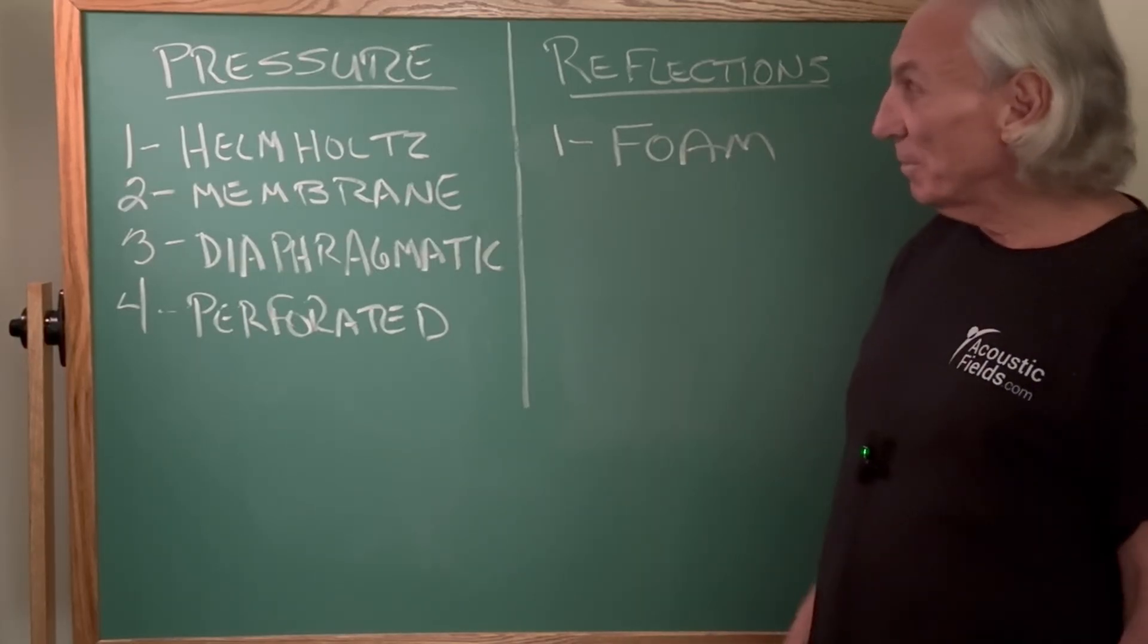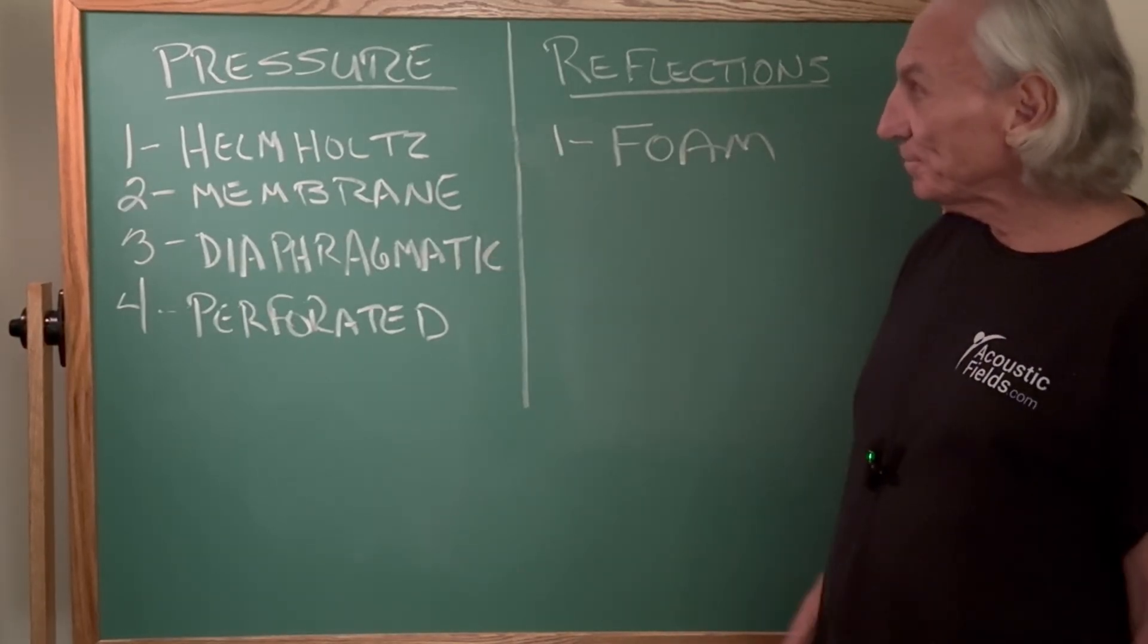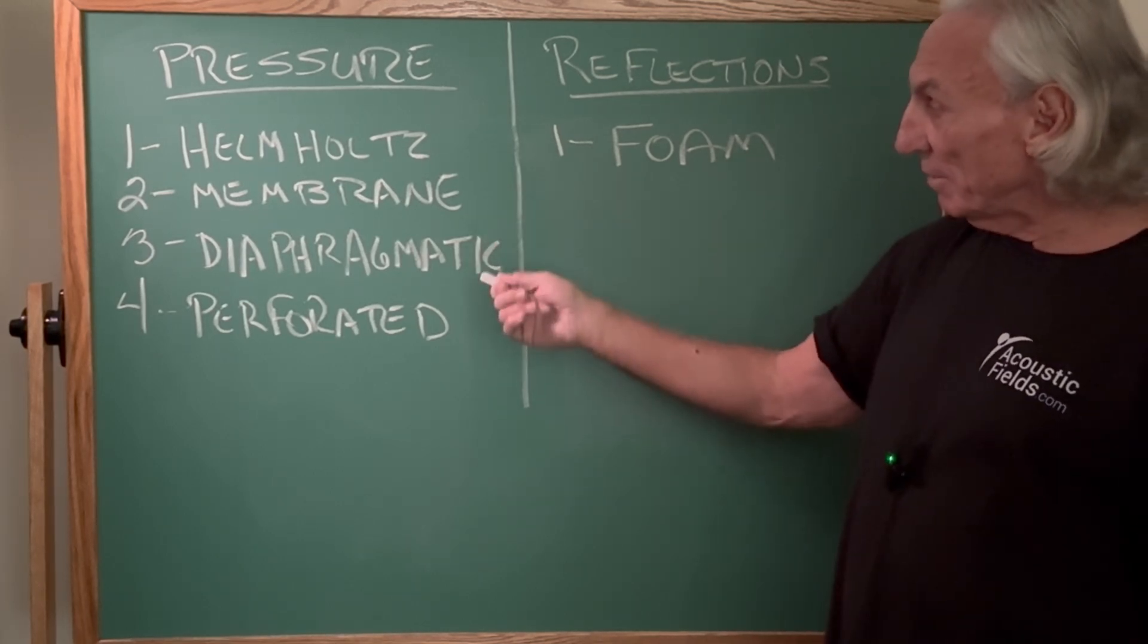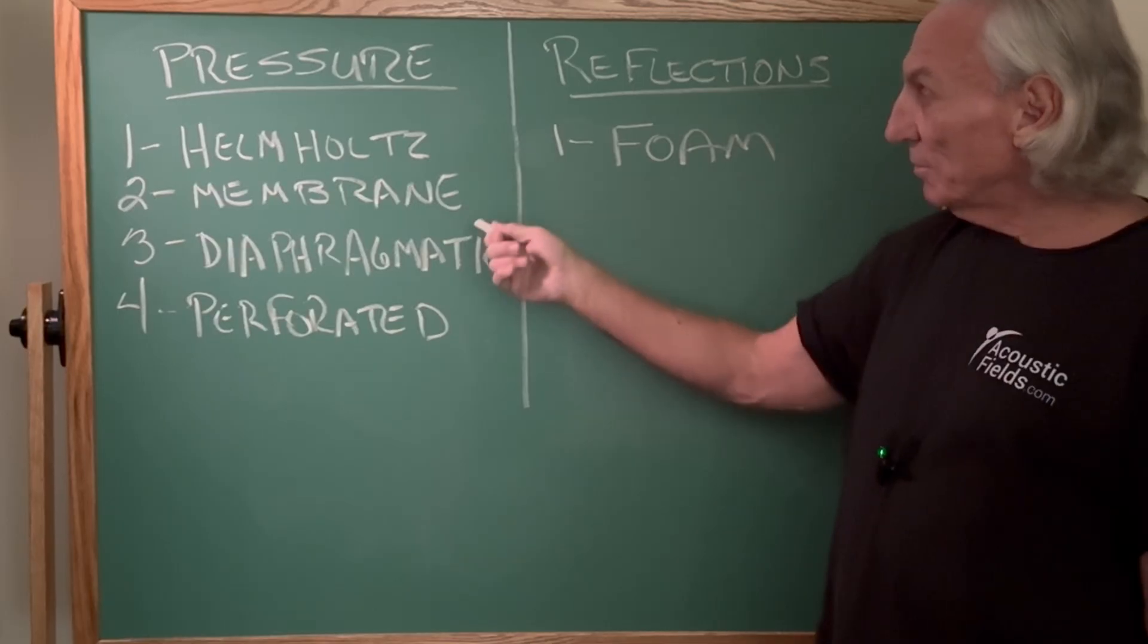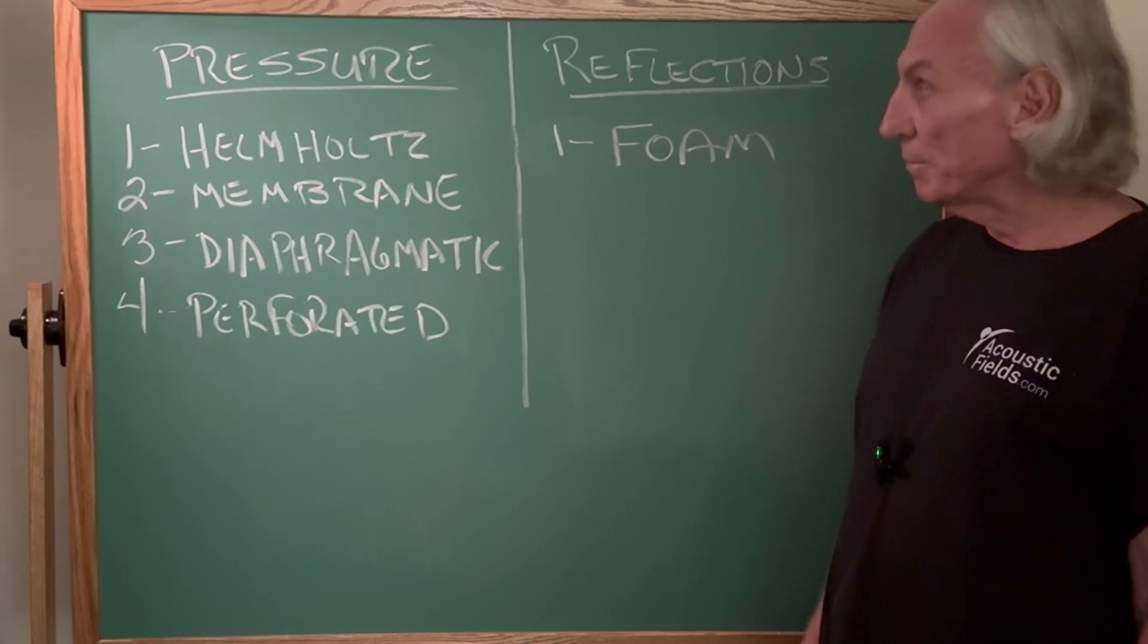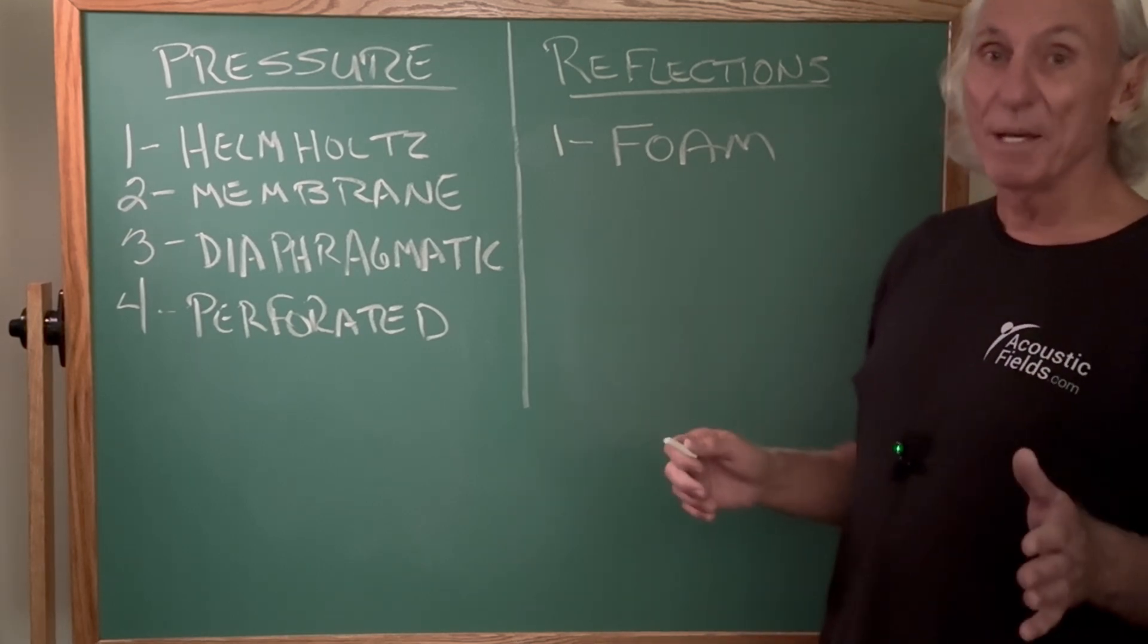Let's look at treatment. So we have four kinds: Helmholtz, membrane, diaphragmatic, and perforated. So let's go through those four types of absorption, because with pressure waves, everything below 100 hertz we're not going to diffuse.